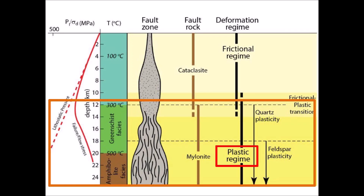The plastic regime at the bottom of the chart starts 12 kilometers below the surface of the earth and goes down to at least 24 kilometers below the surface. Quartz plasticity starts at about 12 kilometers below the surface where the temperature is 300 degrees Celsius, and continues to the bottom of the chart at 24 kilometers below the surface. Feldspar plasticity starts at about 18 kilometers below the surface where the temperature is close to 500 degrees Celsius. At the pressure and temperature conditions typical of the middle crust, quartz is mechanically weaker than feldspar due to crystal plasticity.